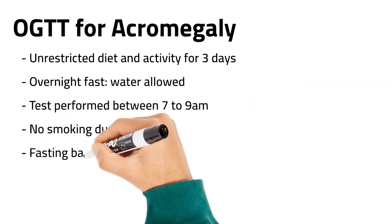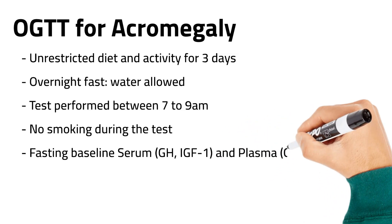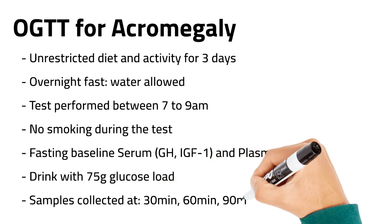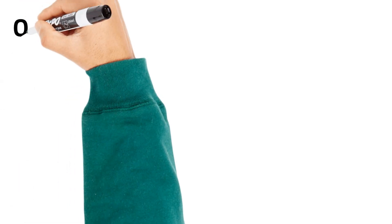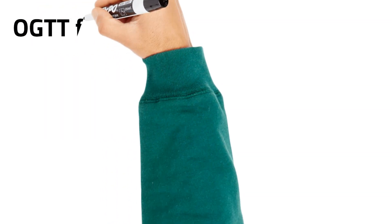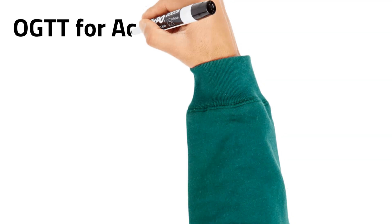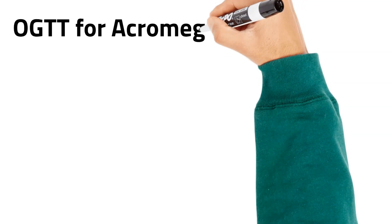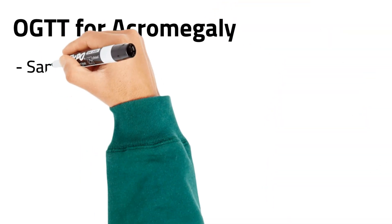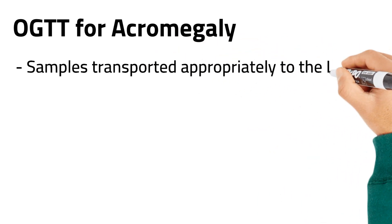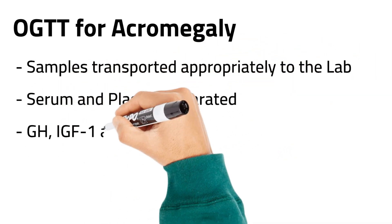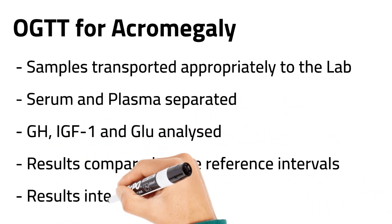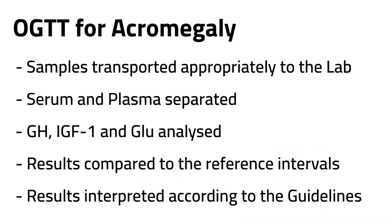This is followed by the ingestion of a glucose drink with 75 grams of glucose load and serial blood collections at 30 minutes, 60 minutes, 90 minutes, and 120 minutes post-glucose ingestion. All blood samples are transported to the laboratory, where they are centrifuged to separate serum and plasma from whole blood. The serum samples are used to measure growth hormone and IGF-1, and the plasma specimens are used to measure glucose. Under normal circumstances, glucose ingestion should suppress growth hormone secretion, but in acromegaly this suppression may be compromised. The results are then compared to established cutoff values and interpreted according to the guidelines.